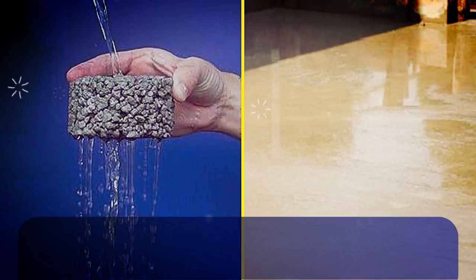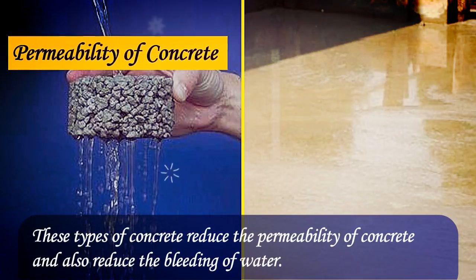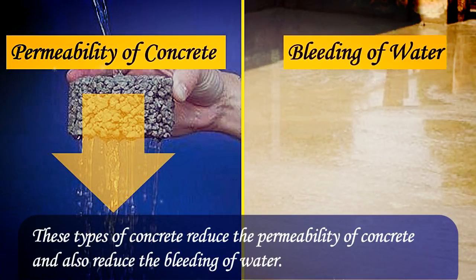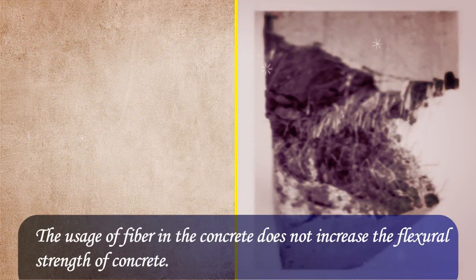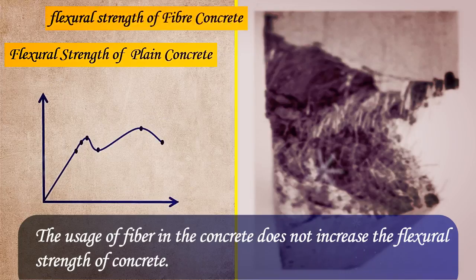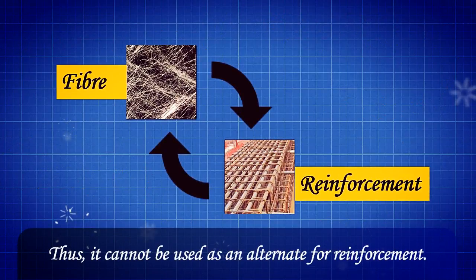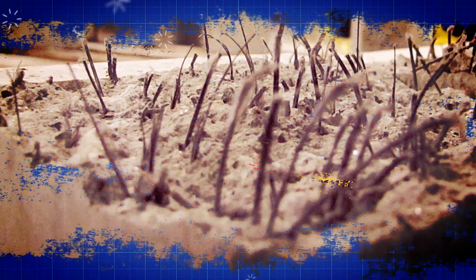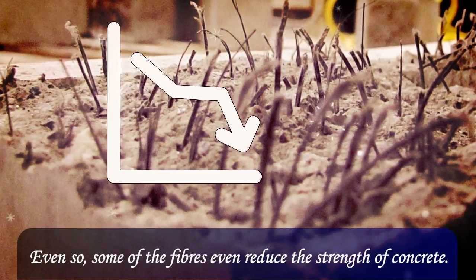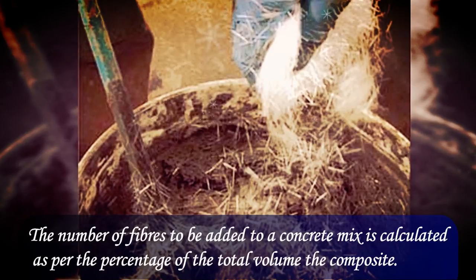The usage of fibers in concrete controls cracks due to plastic shrinkage and drying shrinkage. This type of concrete reduces the permeability of concrete and also reduces the bleeding of water. However, the usage of fiber in concrete does not increase the flexural strength of concrete, thus it cannot be used as an alternate for reinforcement.